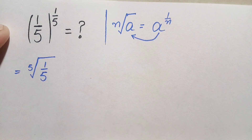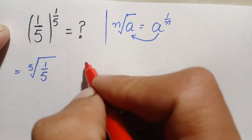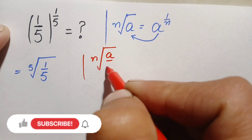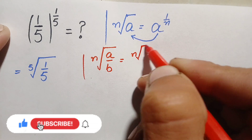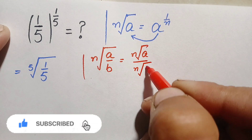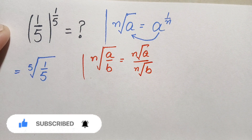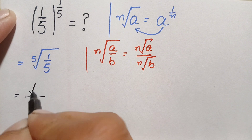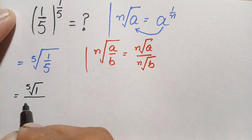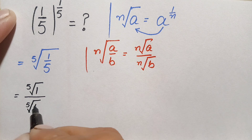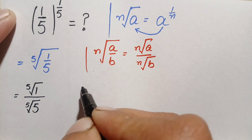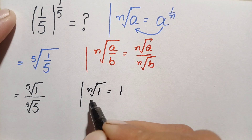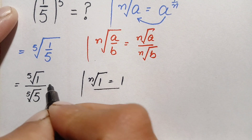Now we will use another result. We will take this fifth root of numerator and denominator separately. We can write the nth root of a divided by b as the nth root of a divided by the nth root of b. Using this result, this number becomes the fifth root of one divided by the fifth root of five. Remember that any root of one is always equal to one.